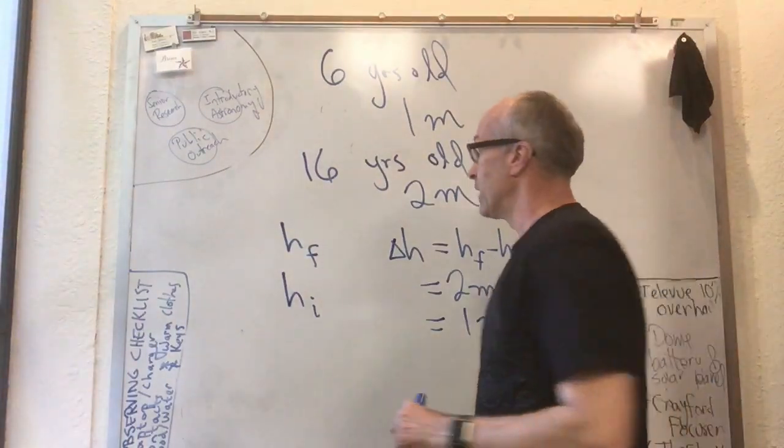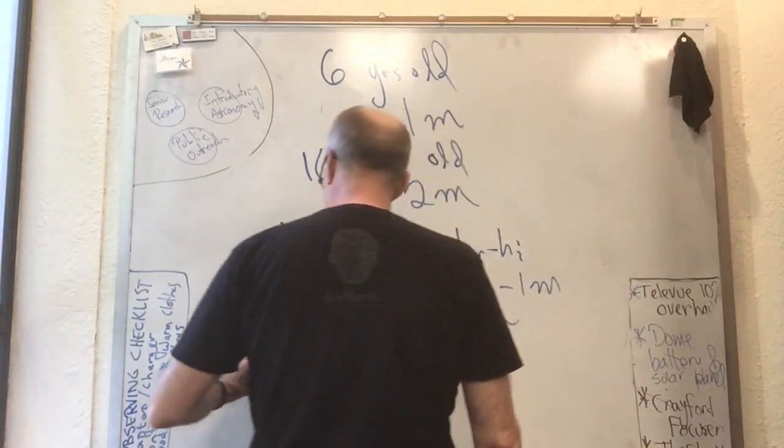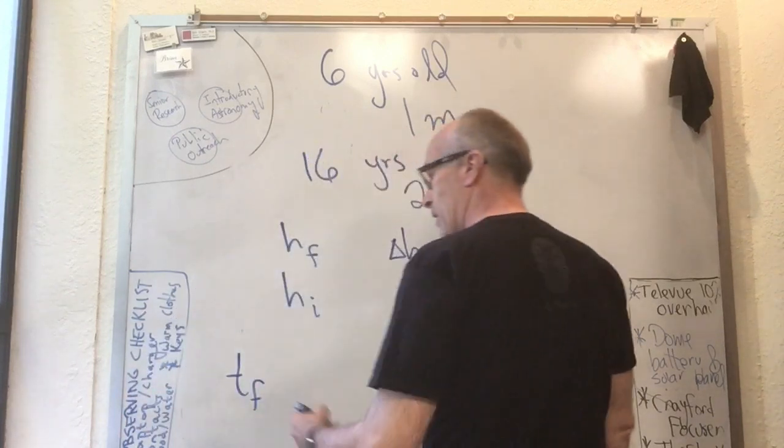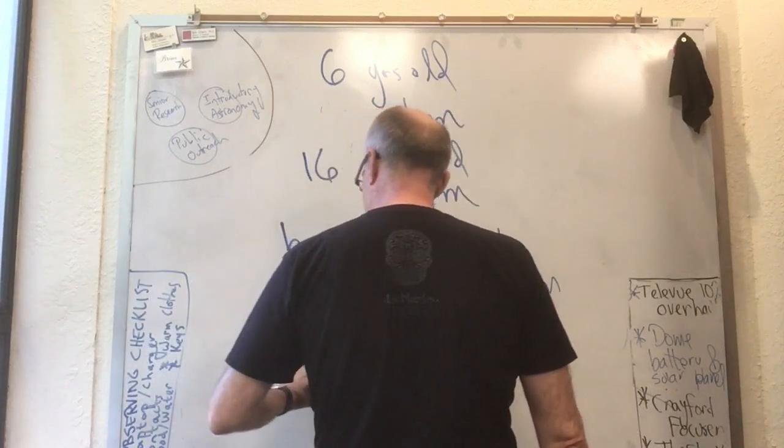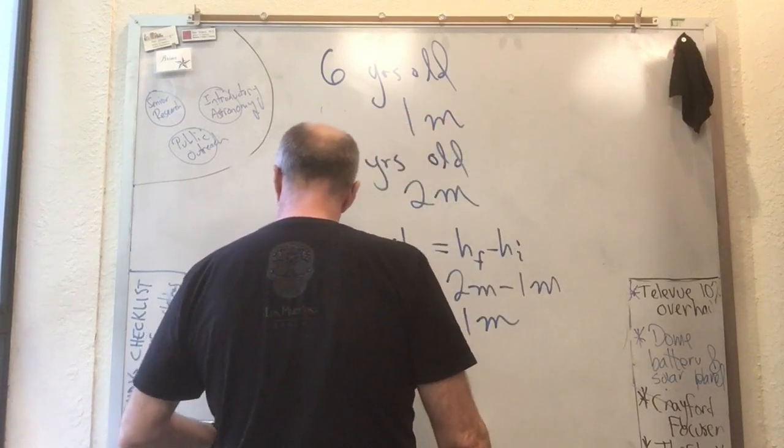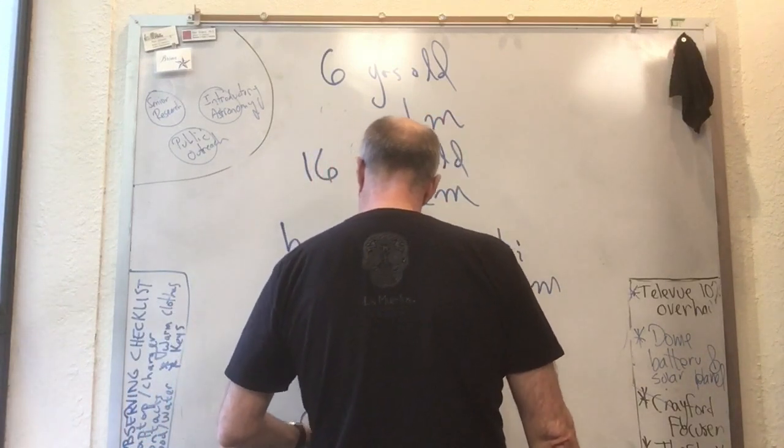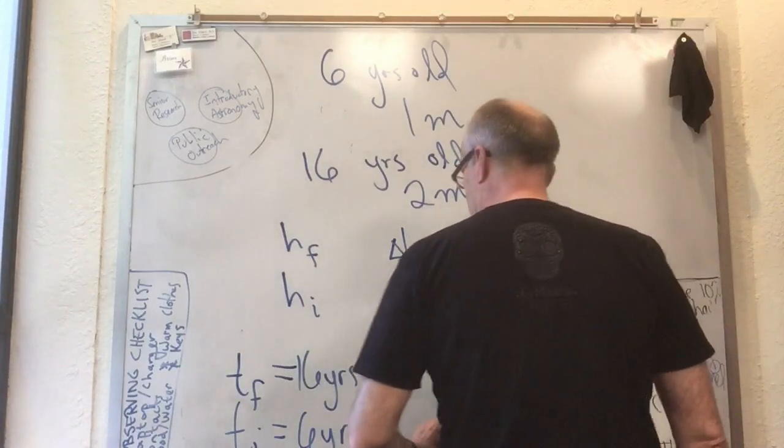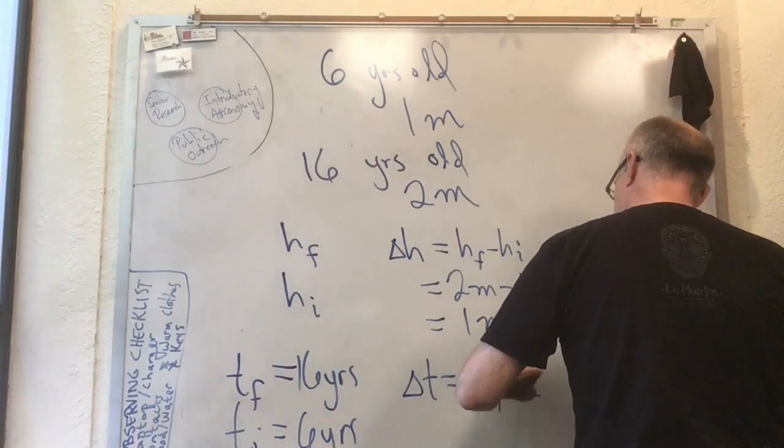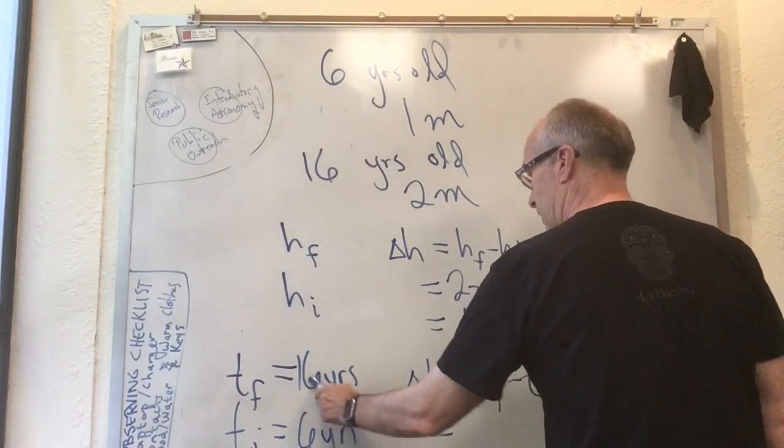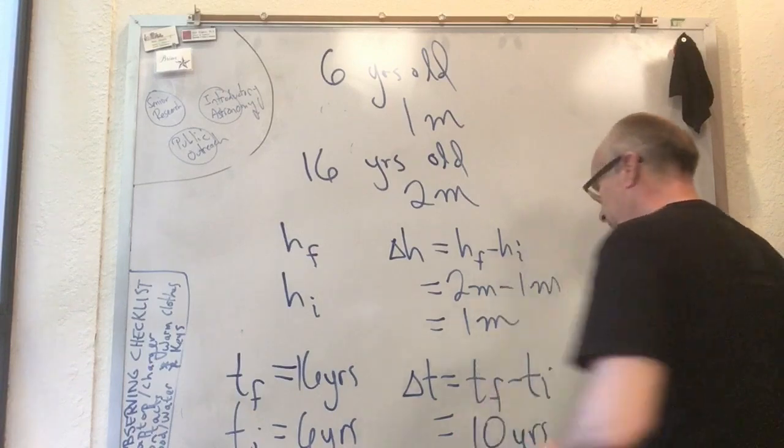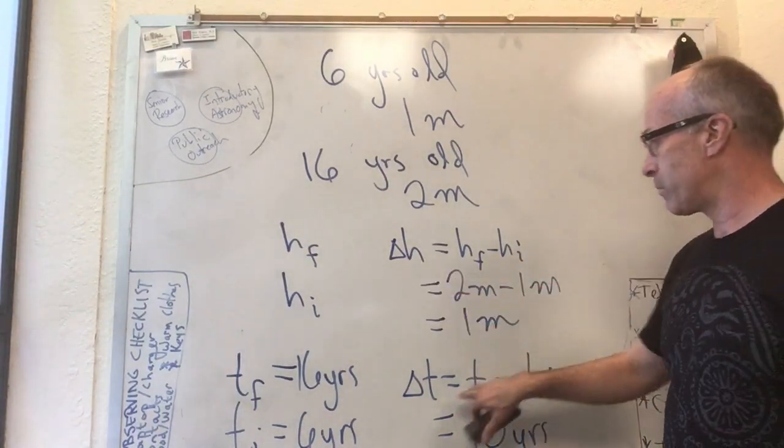Meanwhile we have delta t, took 10 years. Let's go a little slower. t final is 16 years, t initial 6 years. t final minus t initial, which is delta t, is 16 years minus 6 years, is 10 years.